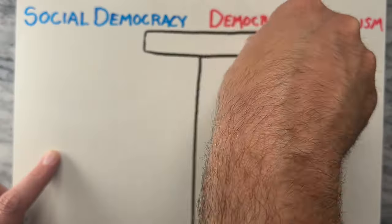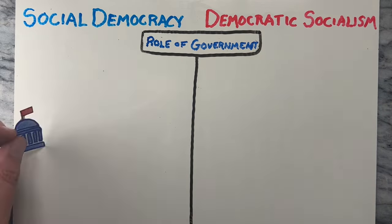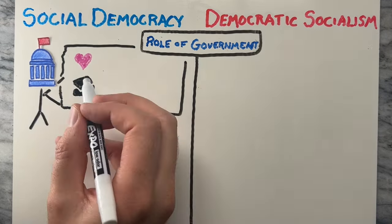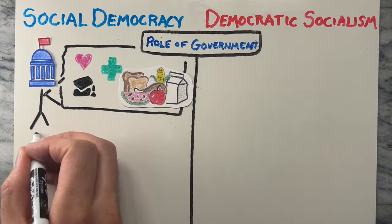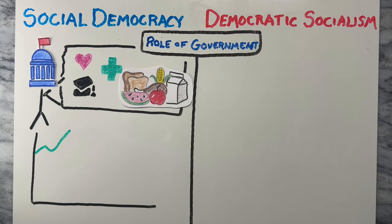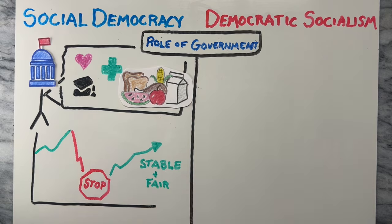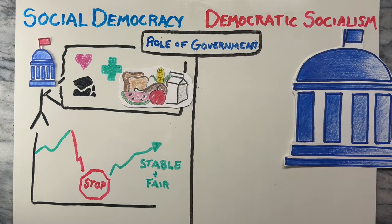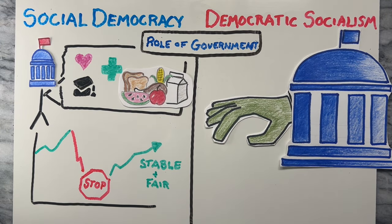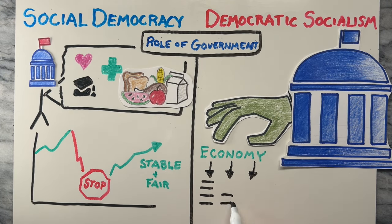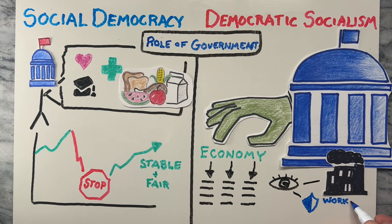Now let's look at the role of government. In social democracies, the government plays an active role in providing social services, education, health care, and other essential needs. It intervenes in the market to correct market failures and maintain a stable, fair economic environment. Democratic socialism envisions a more significant role for the government in managing the economy and ensuring that wealth and power are more evenly distributed. The government is responsible for overseeing industries in the public interest and protecting workers' rights.